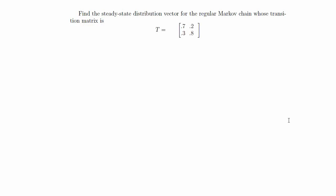In this video I'm going to try to do two problems about steady-state distribution vectors. I'm going to do one example where the transition matrix for the Markov chain is a 2 by 2, which is this one, and then I'll try to do one where the transition matrix is 3 by 3. This problem says: find the steady-state distribution vector for the regular Markov chain whose transition matrix is the one given.